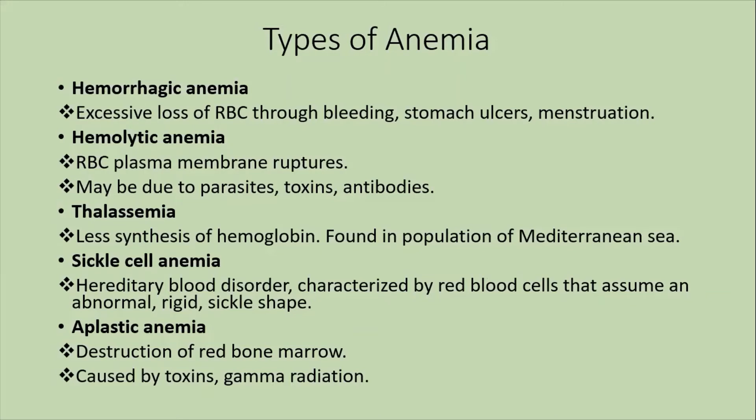Hemorrhagic anemia results from excessive loss of red blood cells through bleeding, such as from stomach ulcers, menstruation, or any disease causing excessive blood loss. Hemolytic anemia involves destruction of red blood cells by parasites, infections, toxins, and antibodies.